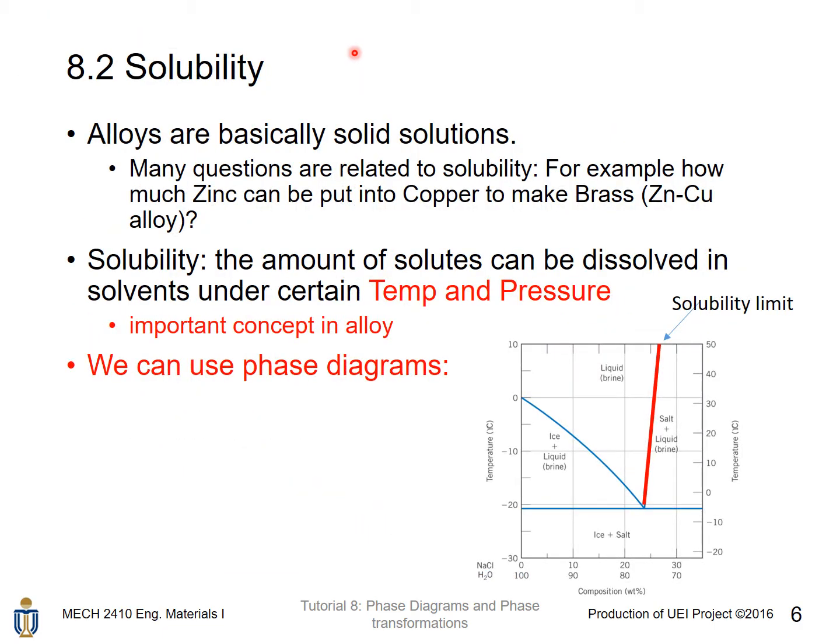The first concept used to describe phase change phenomena is solubility — the amount of solute that can be dissolved in a solvent under certain temperature and pressure. This is an important concept in alloys, as alloys are basically solid solutions. Many engineering questions are related to solubility, for example, how much zinc can be put into copper to make brass, which is a zinc-copper alloy. We can use phase diagrams for this purpose.